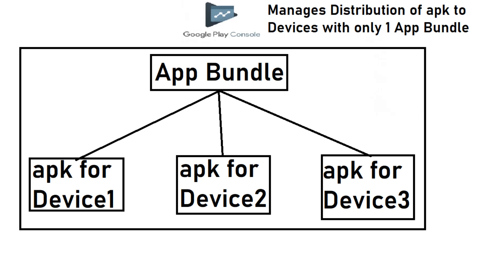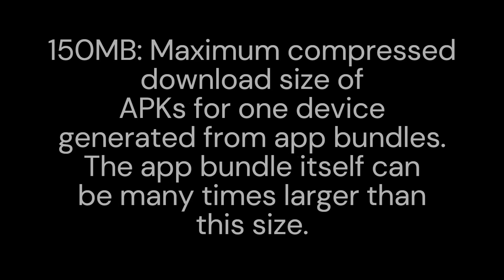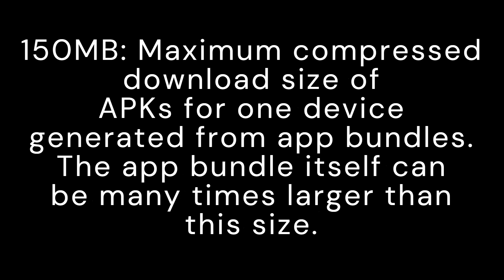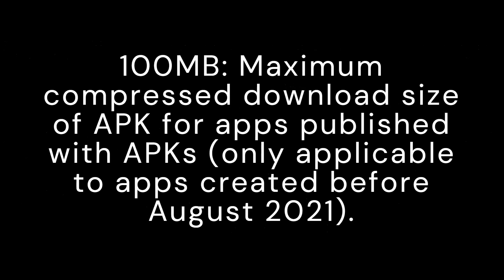Google puts a limit on the maximum file size which can be uploaded on Play Console. 150 megabytes is the maximum compressed download size of APKs for one device generated from app bundles. The app bundle itself can be many times larger than this size. 100 megabytes is the maximum compressed download size of APKs for apps published with APKs, only applicable to apps created before August 2021.